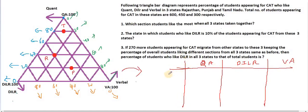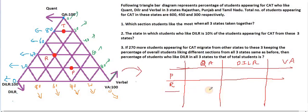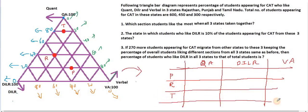Now three states — those are nothing but Punjab, Rajasthan, Tamil Nadu — and a total row.